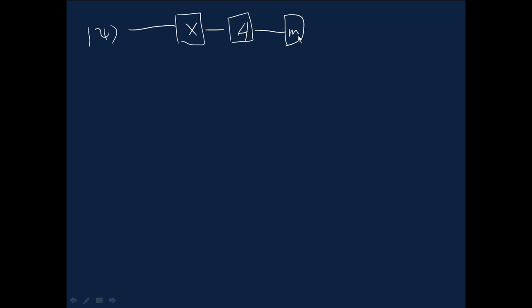It can be convenient to introduce some notation. Let's call it m to denote the classical outcome. So m is a classical bit and maybe we use this kind of double wire notation to indicate the classical bit m going off and being used to do something else.